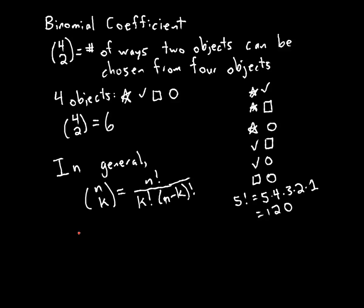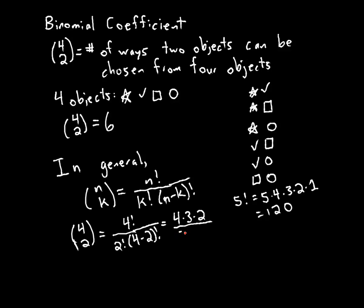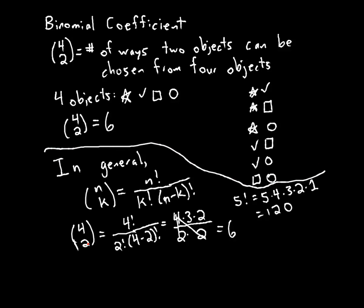We had 4 choose 2 earlier — let's check that it works with our formula. 4 choose 2 equals 4 factorial over 2 factorial times (4 minus 2) factorial. That's four times three times two, over two times one, times two times one. We cancel out the four with these two factors of two, and we end up with six — which matches what we got when we counted all the combinations of objects.